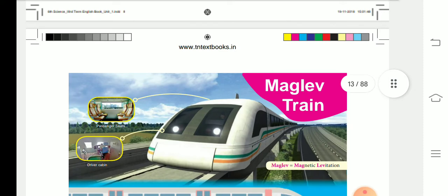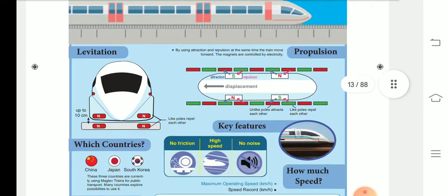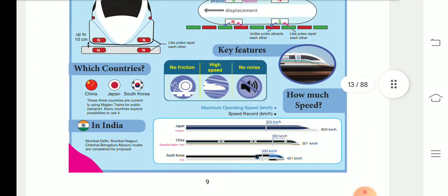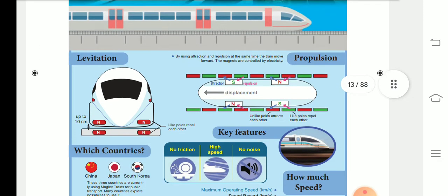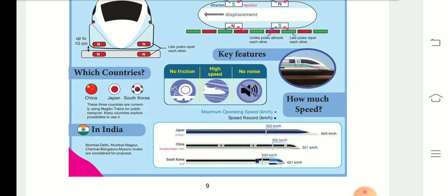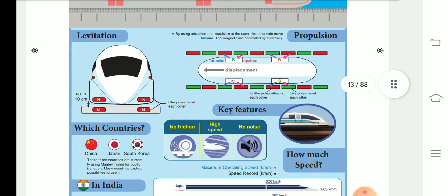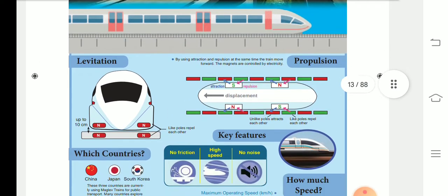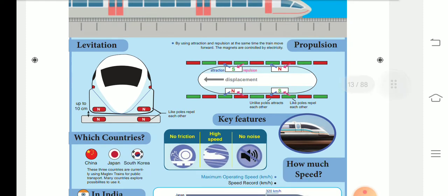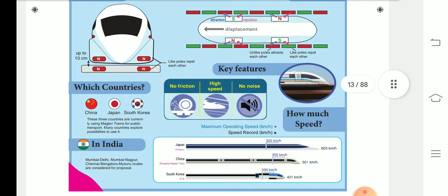The last one is maglev train. This train is introduced in China, Japan, and South Korea. The train does not create heavy sound, and pollution is less. The sound is also less.